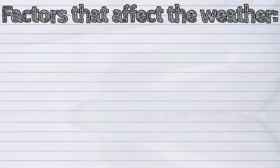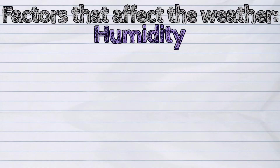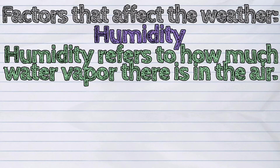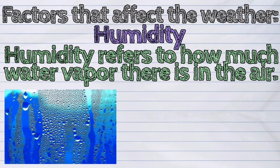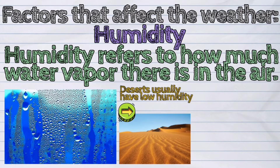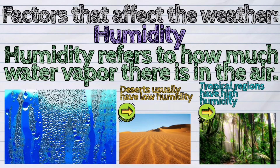Next is humidity. Humidity refers to how much water vapor there is in the air. Deserts usually have low humidity, and tropical regions have high humidity.